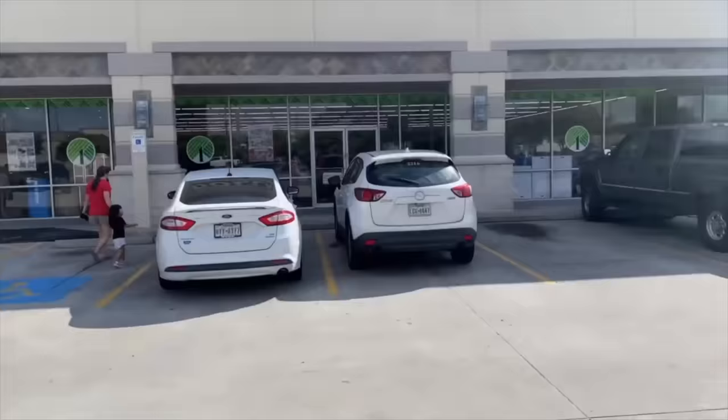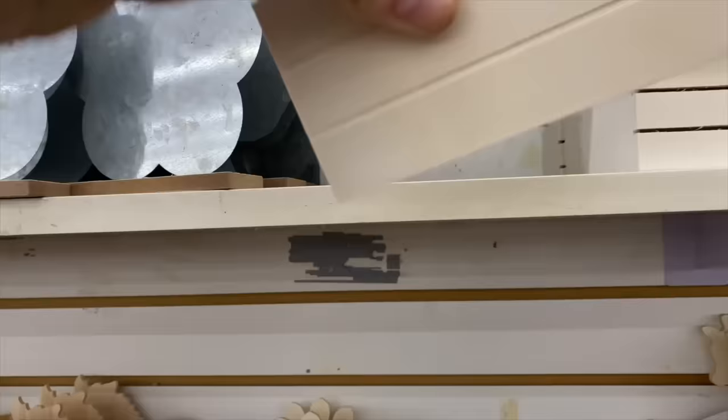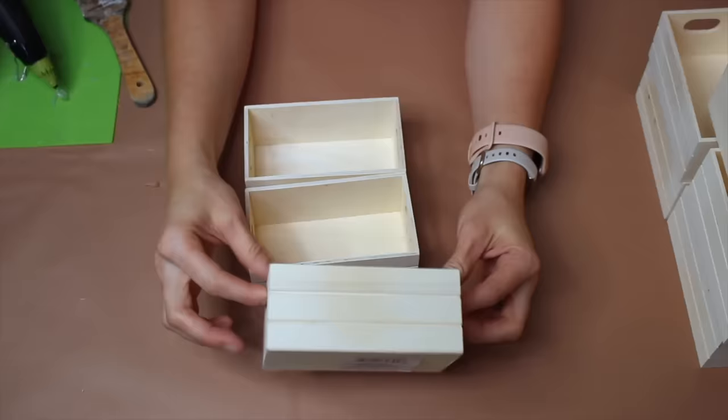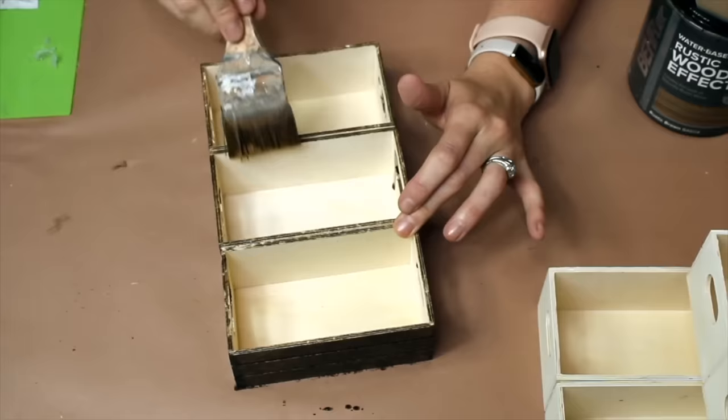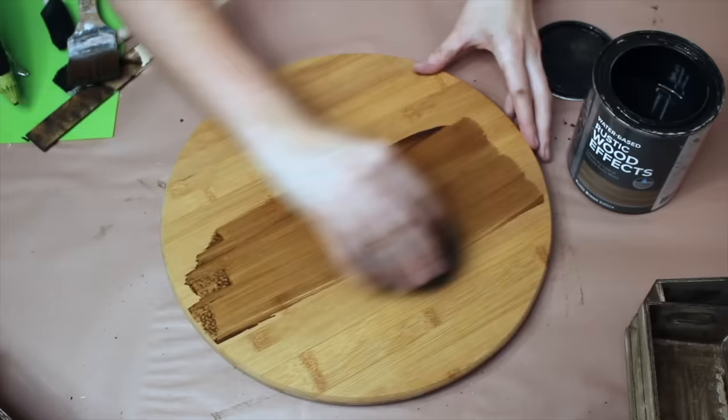So we're going to start with 12 of these really cute little crates from Dollar Tree. First, going to glue them together. So we are going to be using some wood stain. We are going to stain this as well.